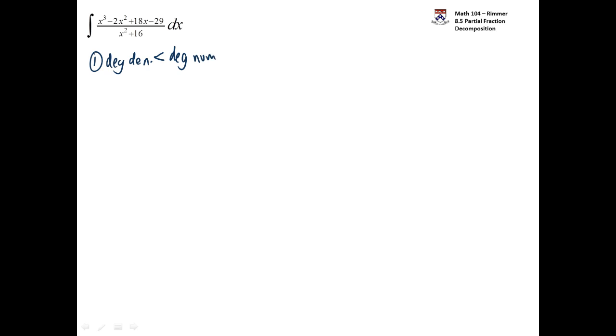We can't start partial fraction decomposition until it's the other way around. The degree of the denominator has to be more than the degree of the numerator. So when you're in this situation, then what you do is long divide the denominator into the numerator.